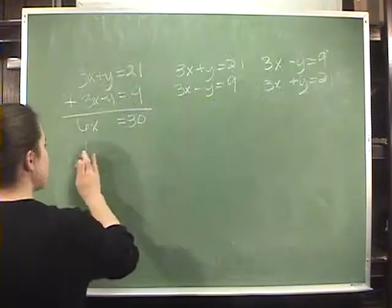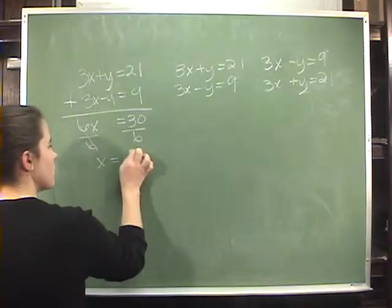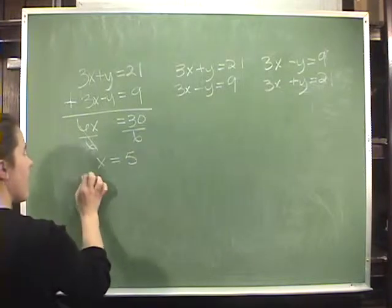If 6x equals 30, then divide both sides by 6, and x equals 5. Plugging that back in,